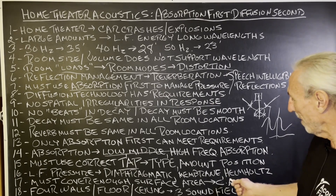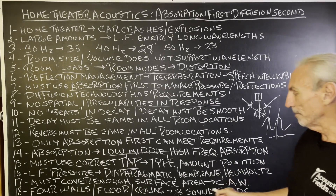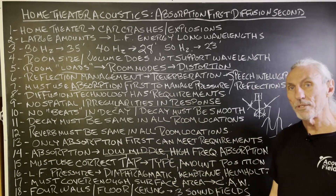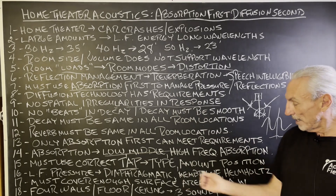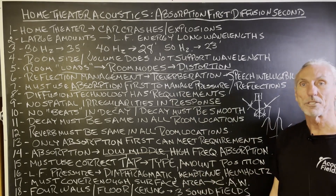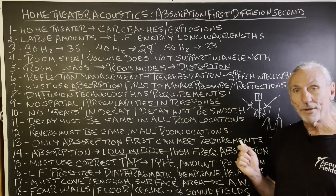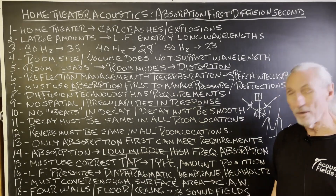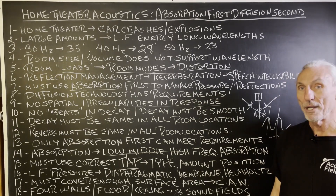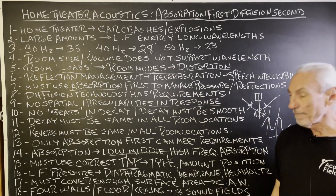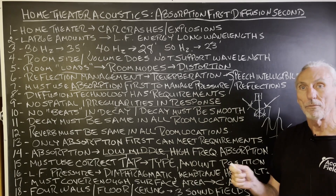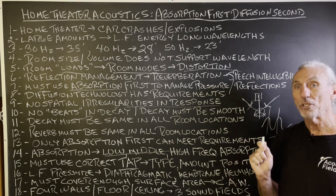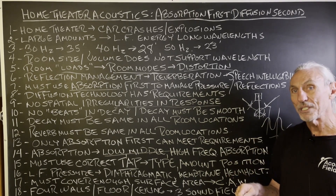For low frequency pressure, we have three tools we can use: diaphragmatic, membrane, and Helmholtz absorbers. Of the three, diaphragmatic is the most powerful — that's the one we use. It's also very heavy, but the performance per square foot cannot be beat with membrane or Helmholtz absorbers. It's broadband, covering a broad range of frequencies, so one product at one location can do a lot in terms of frequency and amplitude.